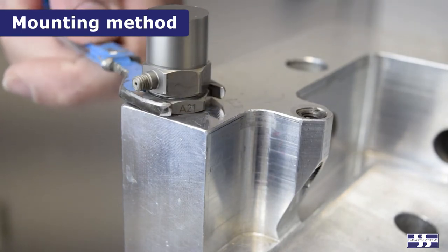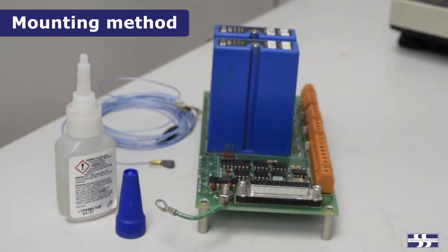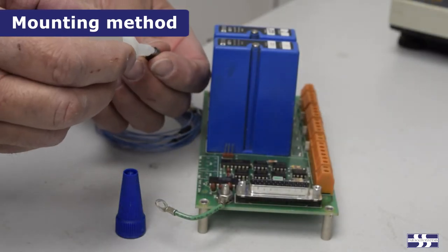High strength adhesives can achieve similar performance as a threaded stud, and are the preferred attachment methods for very small accelerometers which do not have a stud mounting.